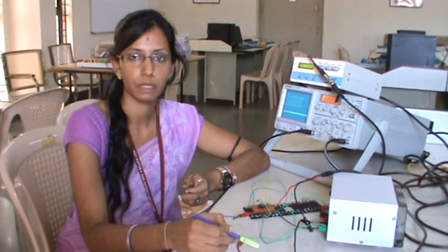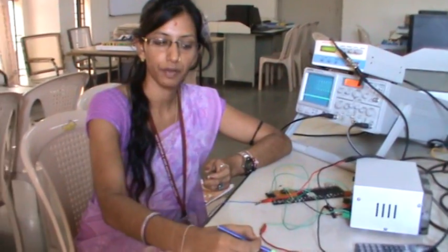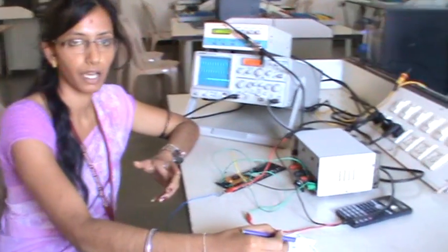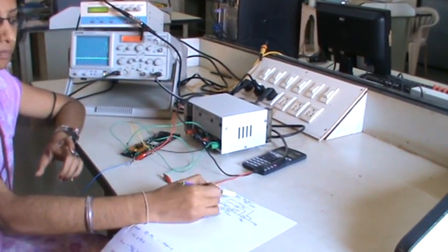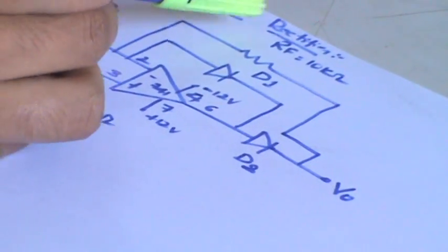Today we will be studying about the experiment, that is a precision rectifier experiment. We will be studying about a half wave precision rectifier. So what is actually a rectifier is, it will convert the AC to pulsating DC, so that we will get a proper output.